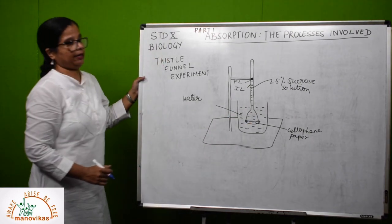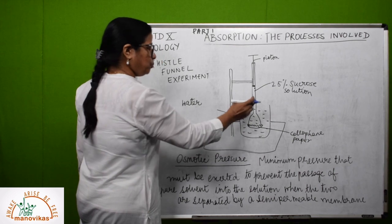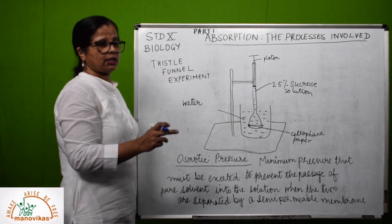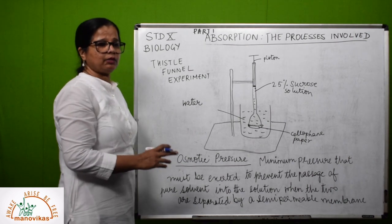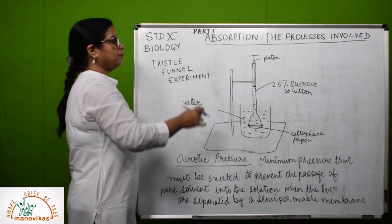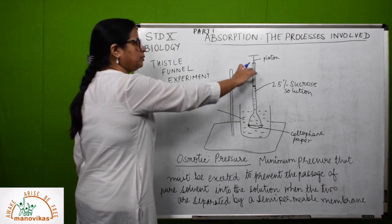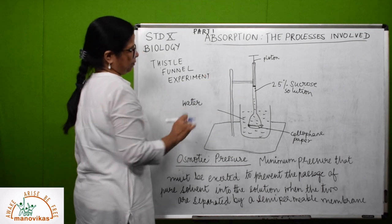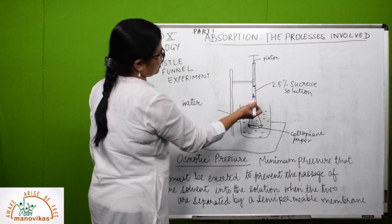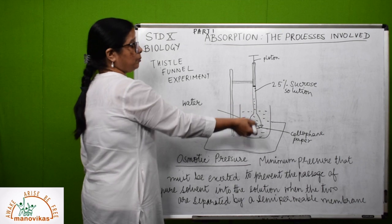Now the question arises: will osmosis continue forever? Ideally it continues until both concentrations become equal. However, in the thistle funnel, as the column of solution rises, the height and weight of the column gradually slows the process. If we have an arrangement with a piston — and every time the level rises we push the piston down, applying pressure — we can nullify the effects of osmosis. This leads to the concept of osmotic pressure.